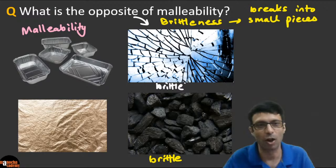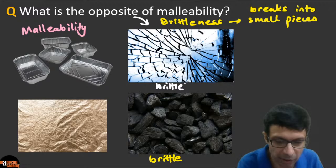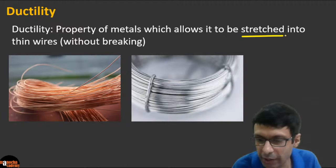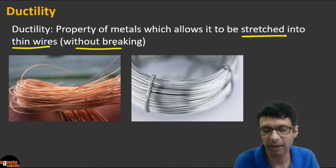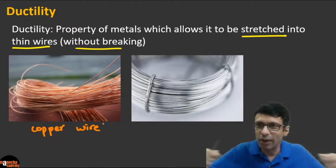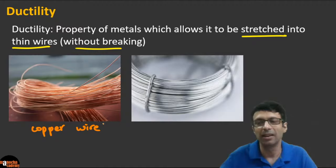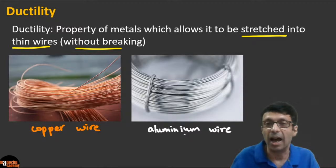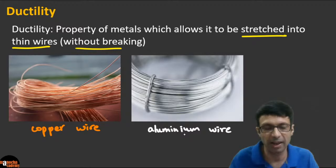Ductility is the property of metals which allows them to be stretched into thin wires without breaking. You can see copper wires — really really thin wires. You take a metal and keep stretching it, and it becomes thin without tearing. Copper and aluminium are great examples of being ductile.